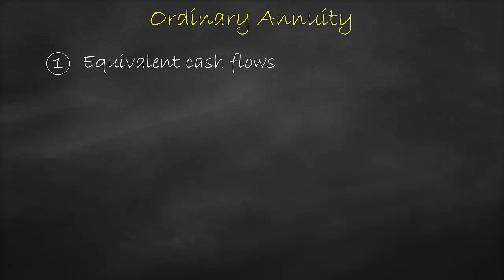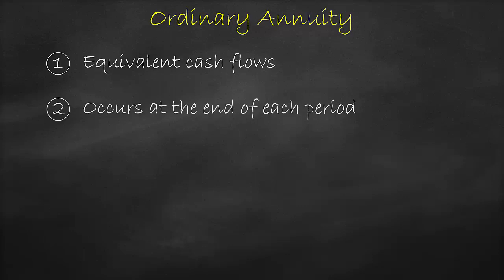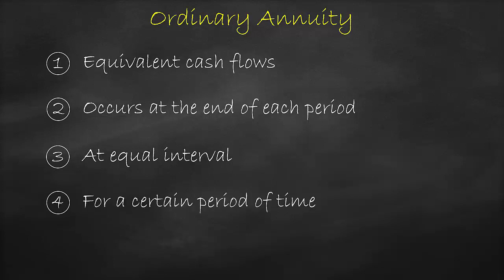Our next formula is the ordinary annuity formula. There are four main characteristics of an ordinary annuity. First, we have equivalent cash flows, meaning the same amount. Second, we receive or pay this cash flow at the end of each period, such as at the end of every year. Third, we receive or pay this cash flow at equal intervals, such as every year. Lastly, we receive or pay this cash flow for a certain period of time, such as three years.